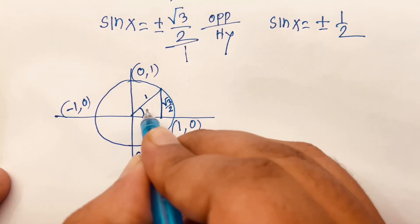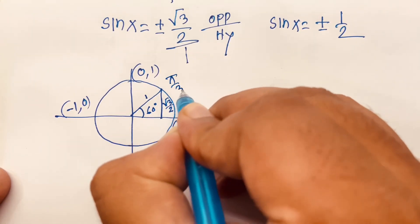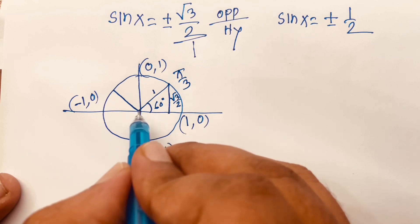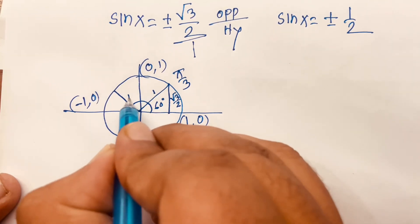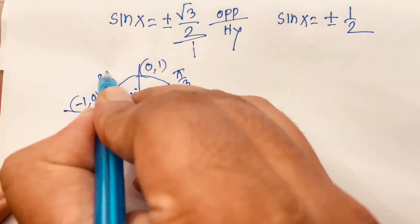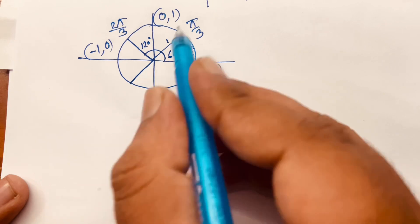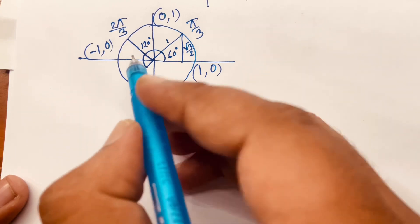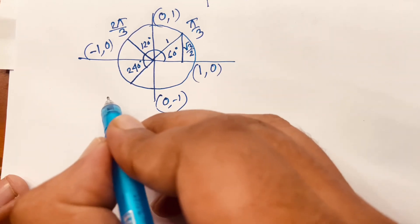In radian that is pi over 3. Then the other case, this angle is 180 degrees minus 60, which is 120 degrees, so in radian that is 2pi over 3. And in the negative case, 180 degrees plus 60 is 240 degrees, which in radian is 4pi over 3.